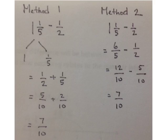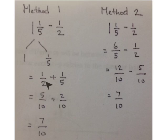The next two methods are done numerically without the fraction boxes. First, we separate the 1 and 1 fifth. Start with 1 and take away 1 half — what we have left is 1 half. So we have 1 half plus the 1 fifth we started with. Getting a common denominator, multiply 1 half times 5 fifths, and 1 fifth times 2 halves, to get 5 tenths plus 2 tenths equals 7 tenths.